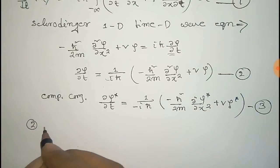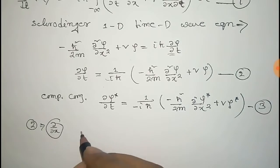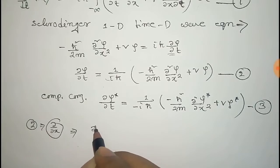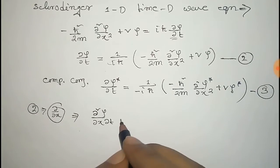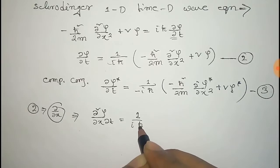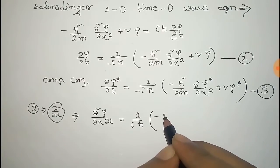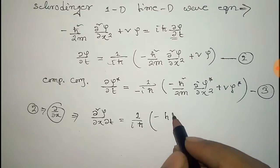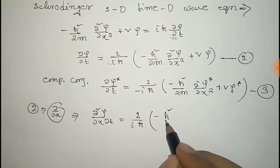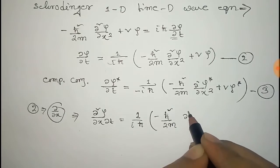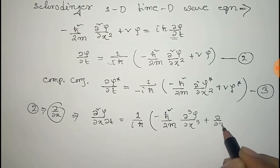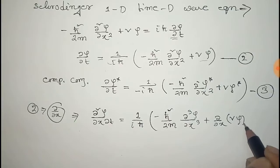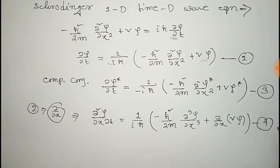Now we partially differentiate Equation 2 with respect to x. We get ∂²ψ/∂x∂t equals (1/iℏ)[−(ℏ²/2m)(∂³ψ/∂x³) + ∂/∂x(Vψ)]. We call this Equation 4.